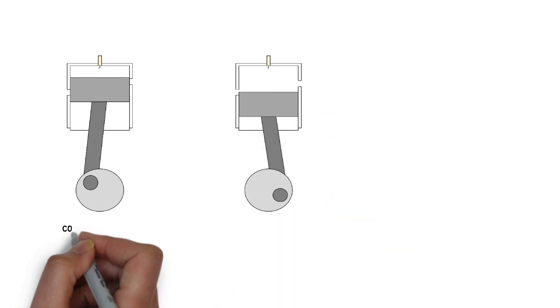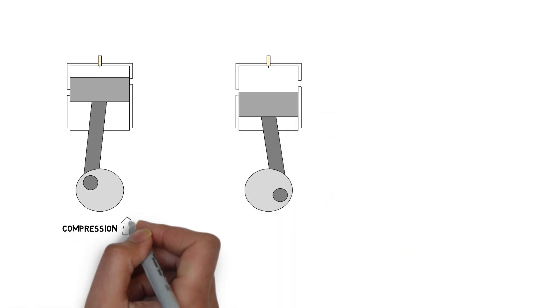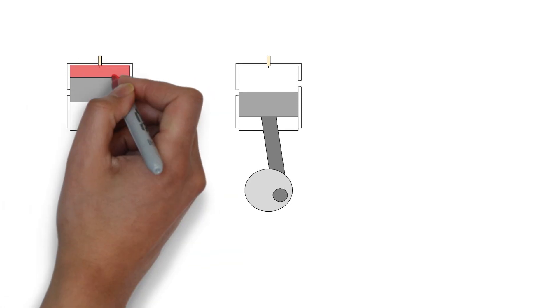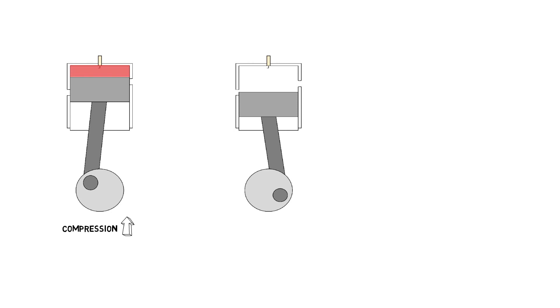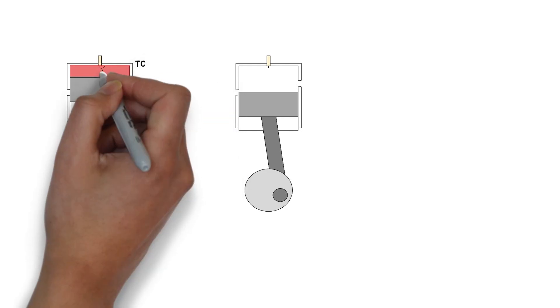The first stroke is compression. As the piston travels up, both the intake and exhaust ports are covered. This movement compresses the cylinder contents and pulls a fresh mixture of air-fuel into the crankcase. When the piston is near top center, combustion is triggered by a spark plug.